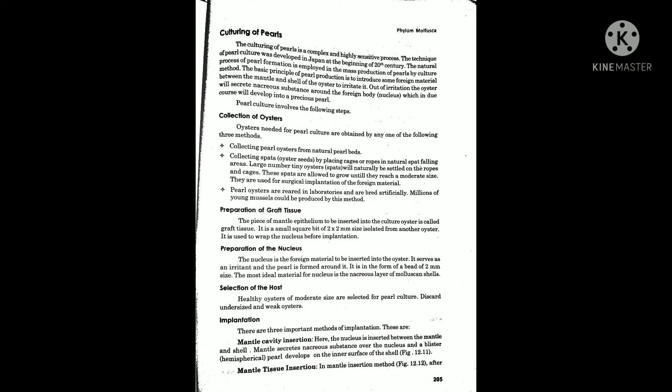The next step is the preparation of the nucleus. The nucleus is the foreign material to be inserted into the oyster. It serves as an irritant and the pearl is formed around it. It is formed as a bead of 2 mm size. The most ideal material for the nucleus is the nacreous layer of the molluscan shell.